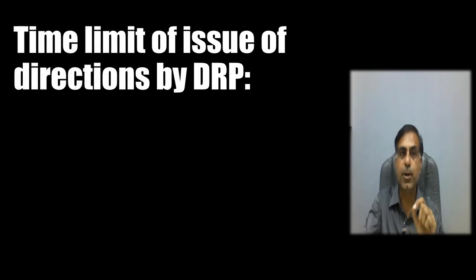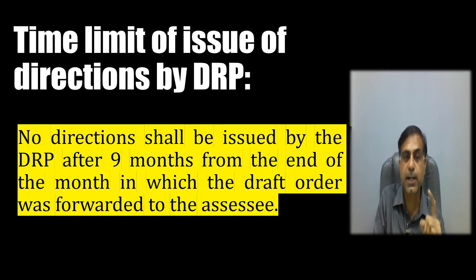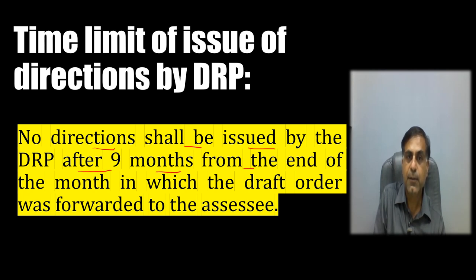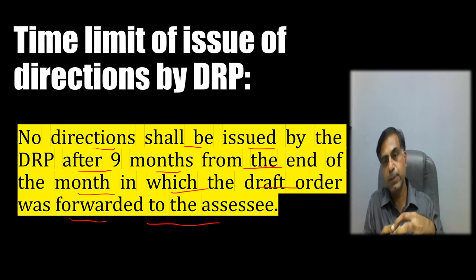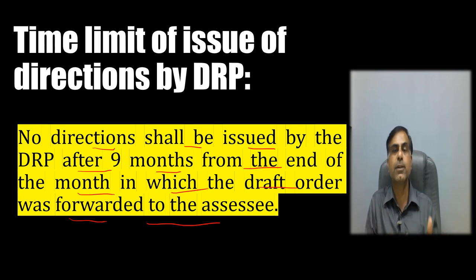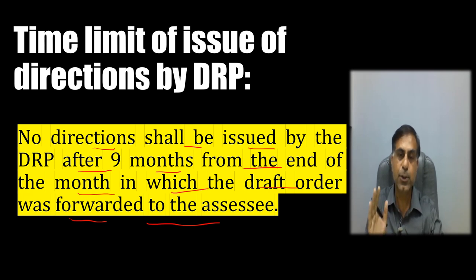Now, what is the time limit for the issue of directions by the DRP? Under Section 144C of the Income Tax Act, no directions shall be issued by the DRP after 9 months from the end of the month in which the draft order was forwarded to the assessee. So within 9 months from the end of that month, the DRP shall finalize its hearing and issue the final directions to the AO.